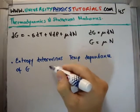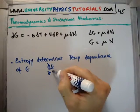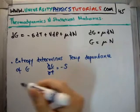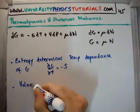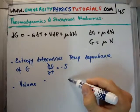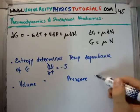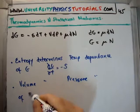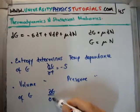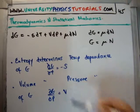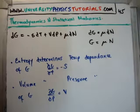The reason it does that is because ∂G/∂T = -S. Similarly, we could say volume determines the pressure dependence of G because ∂G/∂P = V.